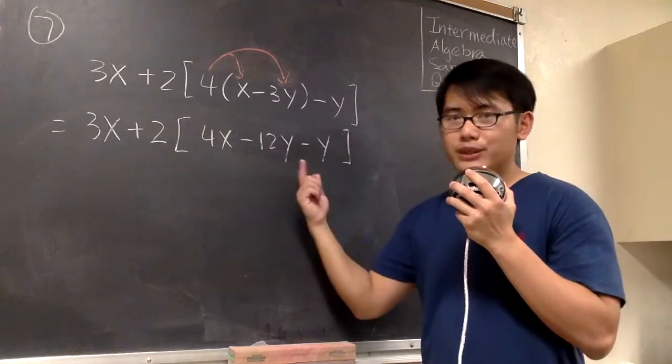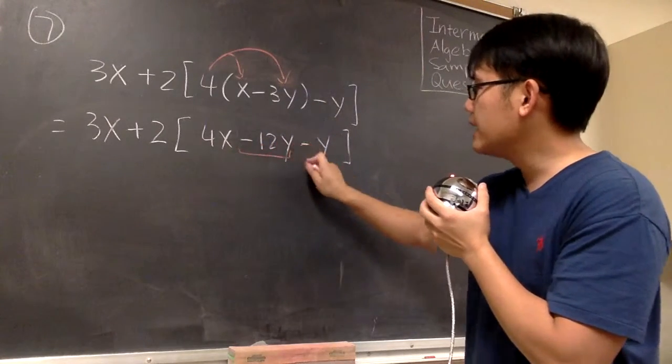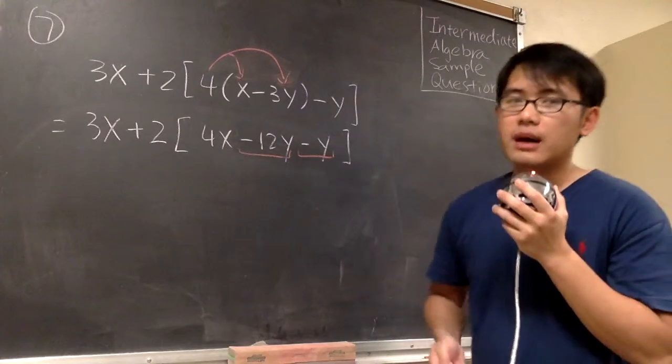And we still have to look at what's inside of the bracket. We see that we have the negative 12y minus y, we can combine terms.